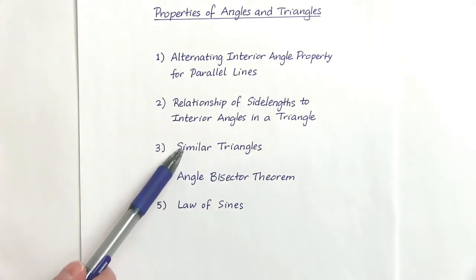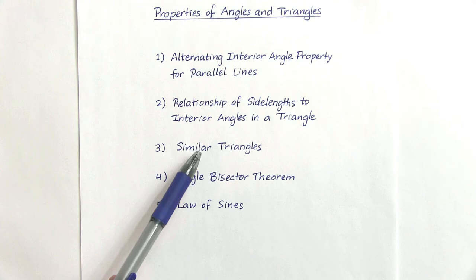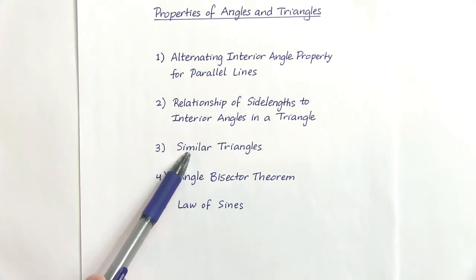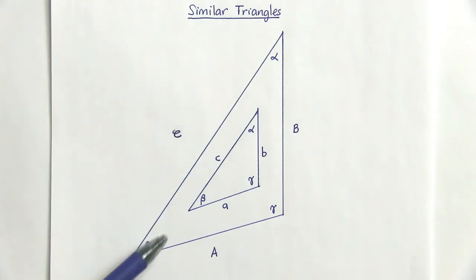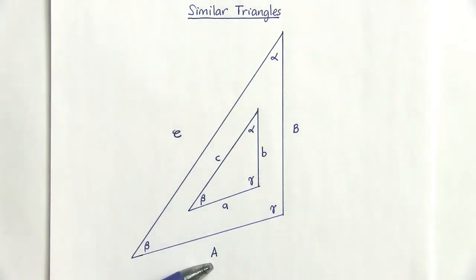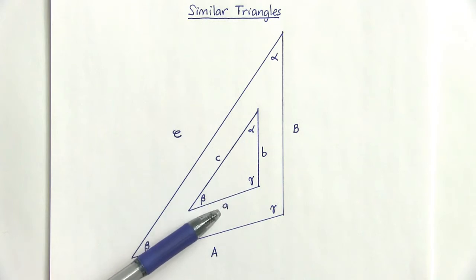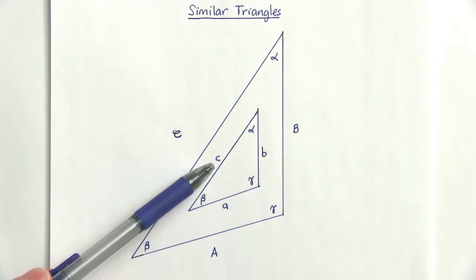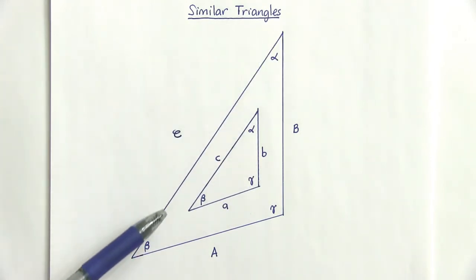The third property we need to recall is how similar triangles work. Similar triangles are ones that share the same set of interior angles. For example, a larger triangle with side lengths A, B, C is similar to a smaller triangle with side lengths a, b, c because each triangle shares the same interior angles alpha, beta, and gamma.